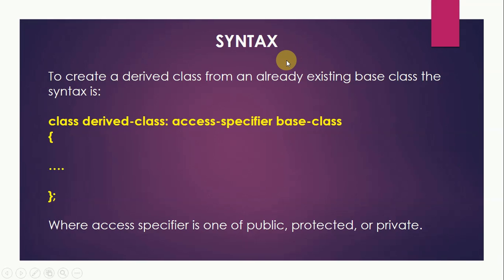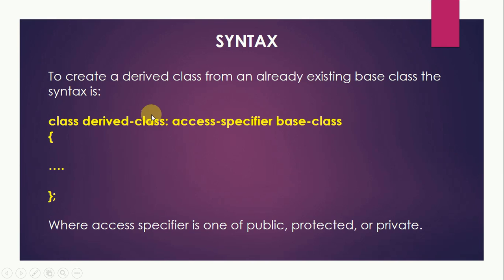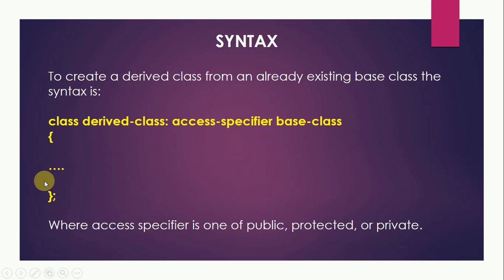Now let us understand the syntax of inheritance to create a derived class from an already existing base class. The syntax is: class DerivedClassName, followed by a colon, then the access specifier, and then the name of the base class from which this derived class is inheriting. Then we give the definition of the derived class within the curly braces. The access specifier can be public, protected, or private.